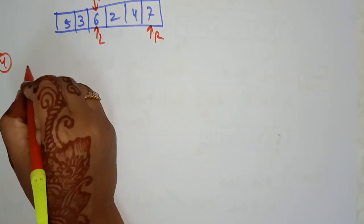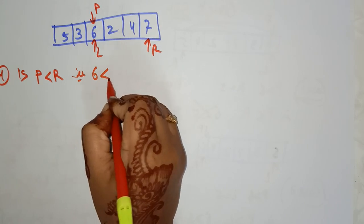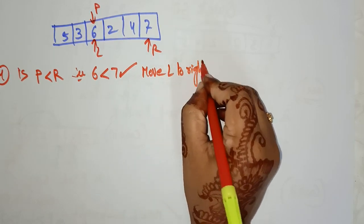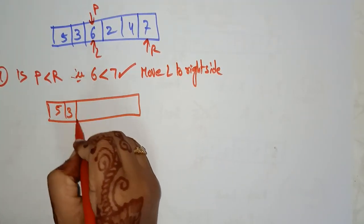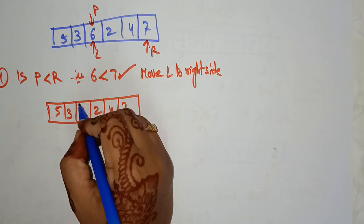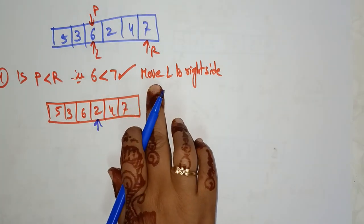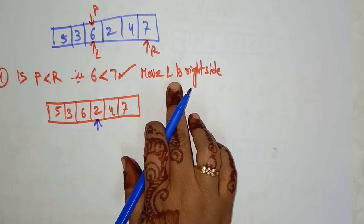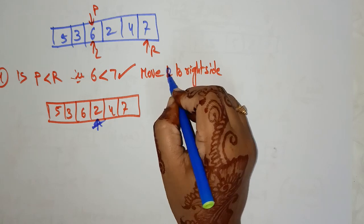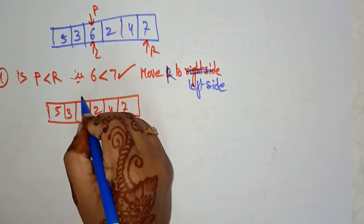Case 4. Check: is pivot less than R? Is 6 less than 7? Yes. When the condition is satisfied, no need to swap — move R to the left side. So now R moves one step left to point at 4. Array remains 5, 3, 6, 2, 4, 7, with L and pivot at 6's position.